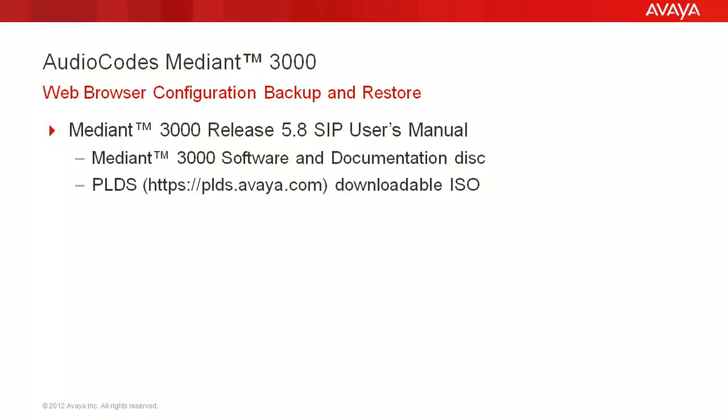For additional information on using the web browser graphical user interface and media gateway configuration, reference the Mediant 3000 Release 5.8 SIP users manual. Media Gateway documentation is contained on the Mediant 3000 software and documentation disk or in the ISO available for download from plds.avaya.com.